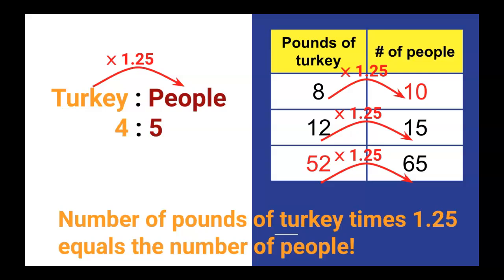We could write this in words. The number of pounds of turkey times 1.25 equals the number of people.